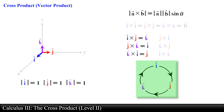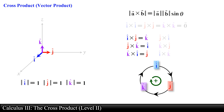The following diagram is extremely useful for remembering the cross products between the unit vectors. For example, i hat cross j hat is equal to k hat. When moving along the arrows clockwise the cross product is positive, and when moving along the arrows counterclockwise the cross product will be negative.